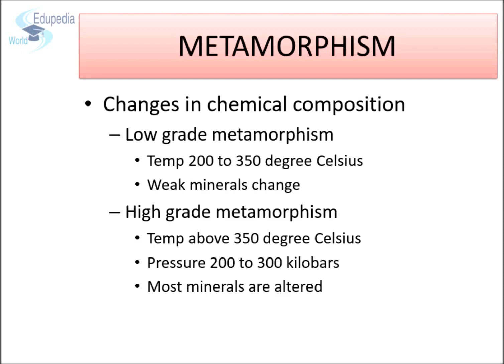Low grade metamorphism: when rocks are subjected to temperatures between 200 to 350 degrees Celsius without any significant change in pressure, they are said to have been subject to low grade metamorphism. These rocks will contain most of the original minerals if they are physically and chemically stable, but weak minerals may convert to new minerals. High grade metamorphism: when rocks are subject to temperatures above 350 degrees Celsius along with pressure of about 200 to 300 kilobars, they are said to have been subjected to high grade metamorphism. These rocks mostly do not contain the original minerals unless they are extremely stable — for example, quartz.